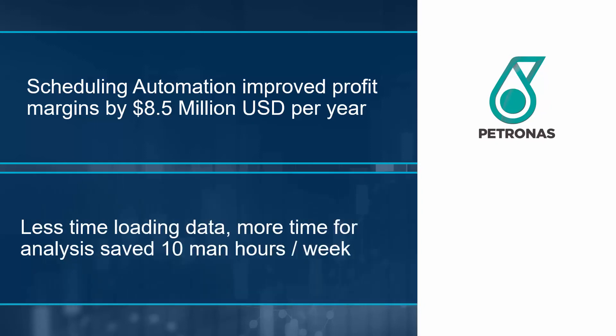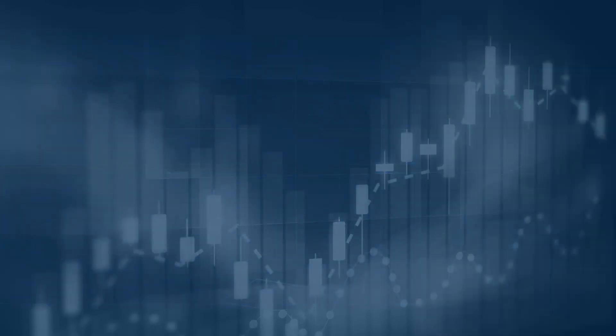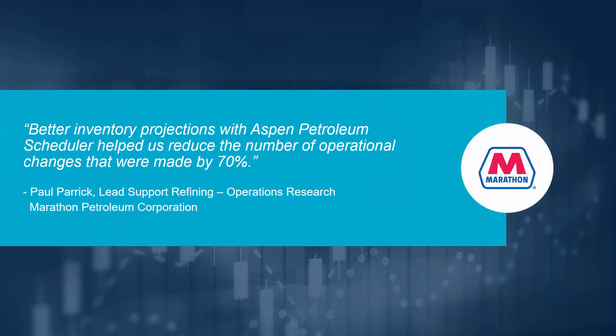By using Aspen Petroleum Scheduler, YPF could spend less time loading data and more time analyzing the schedule, freeing 10 man-hours per week. Marathon Petroleum Corporation reduced the number of operational changes by 70% with better inventory projections from Aspen Petroleum Scheduler.